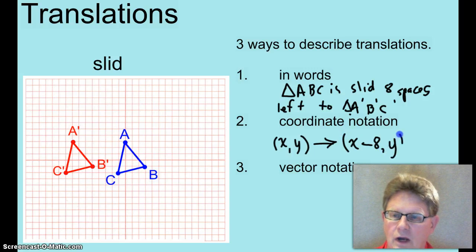If you move to the left, it becomes a negative here, because left is negative right. And vector notation: negative 8 and zero. Didn't go up or down.